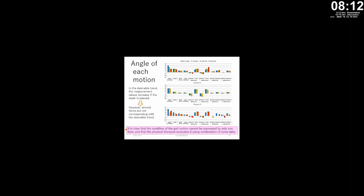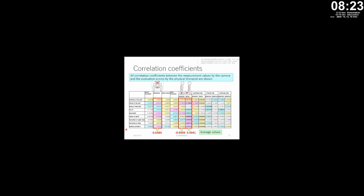Therefore, I calculated all correlation coefficients between the measurement values from the camera images and the variation scores from the physical therapist. The pink cells indicate very strong correlation. We focused on three motions because they have many pink cells. I calculated the average correlation coefficient value to use in the next step.